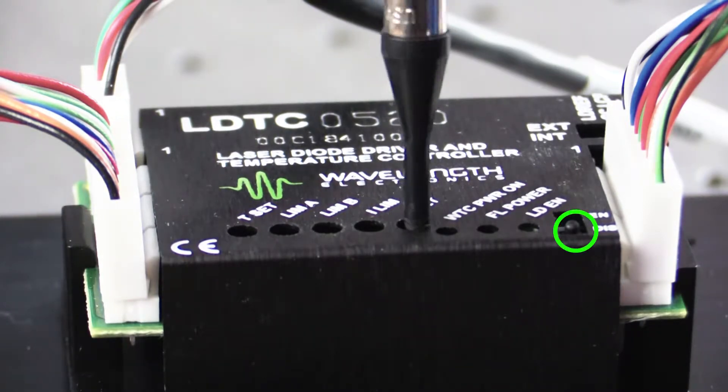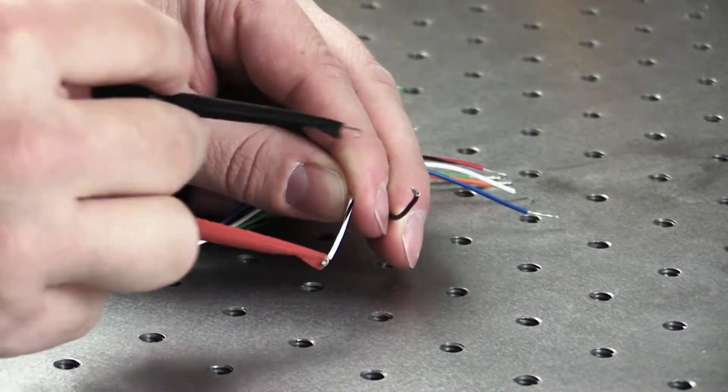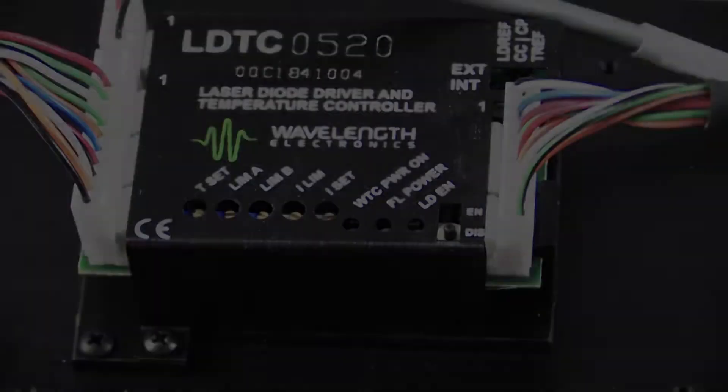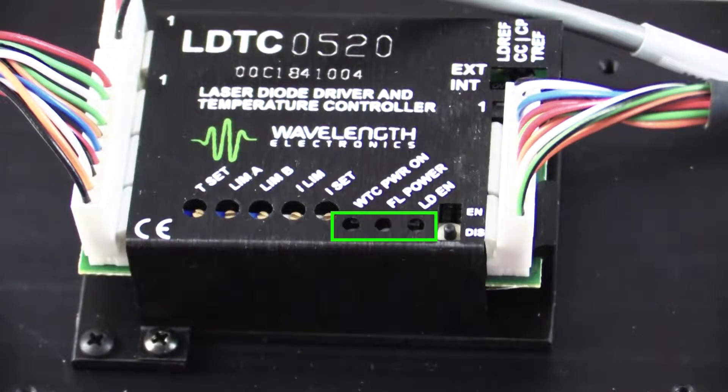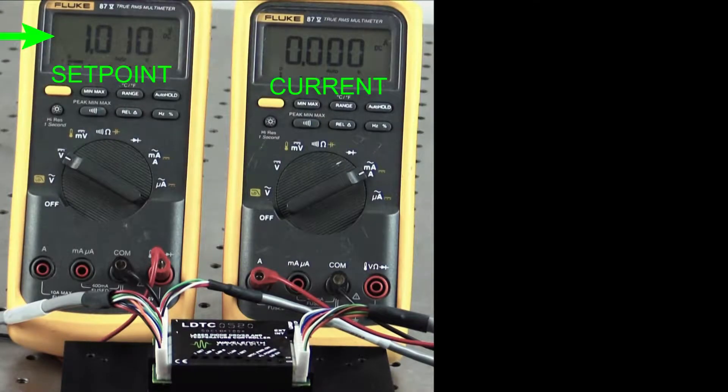Also ensure the LD enable switch is disabled. To monitor the temperature set point, connect the voltmeter to SET Tmon and common. Switch on the power supply. The WTC power on LED and FL power LED will illuminate green. As soon as power is applied, the temperature controller is active.